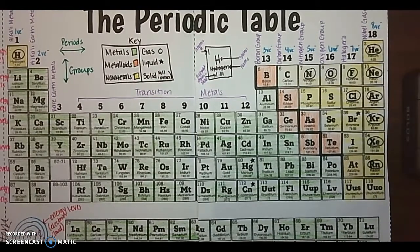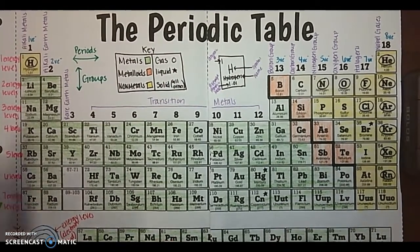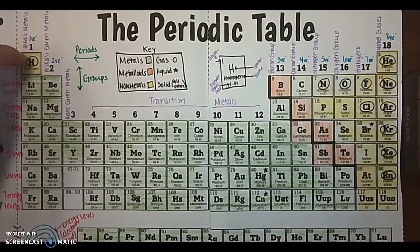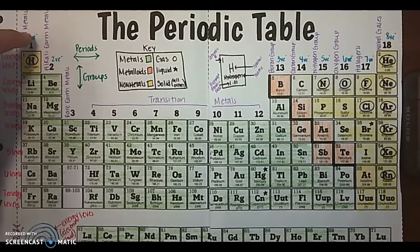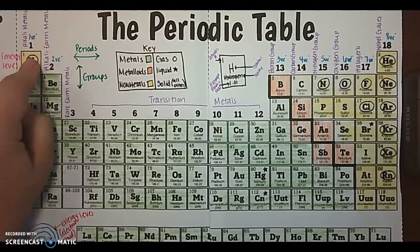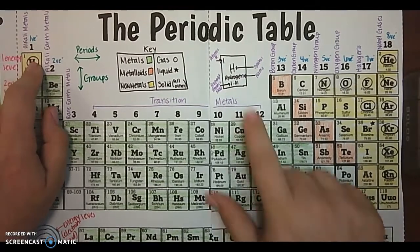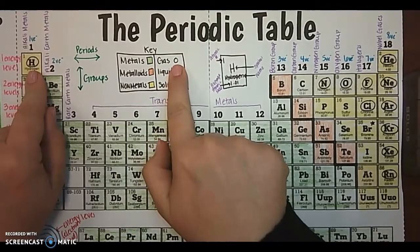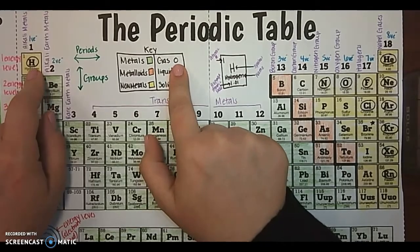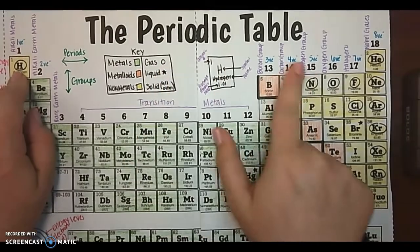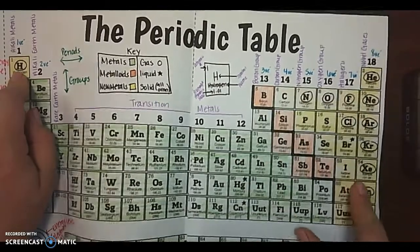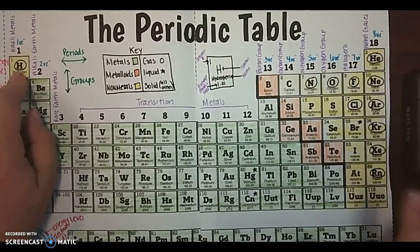So you need to pause the video and color. Now, keep in mind that even though hydrogen is over here, because it has one energy level and one valence electron, it's over here on the periodic table, but it is still a non-metal that is also considered a gas at room temperature. So make sure that you don't forget hydrogen when you're counting or you're labeling your non-metal gases.